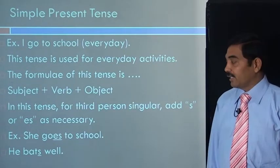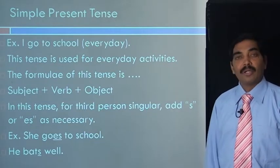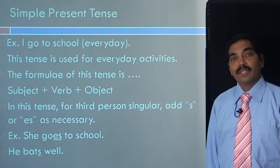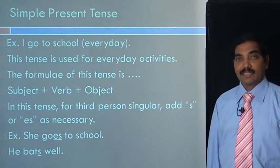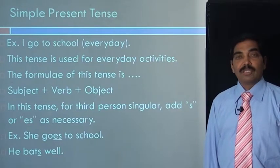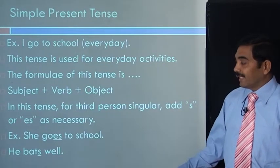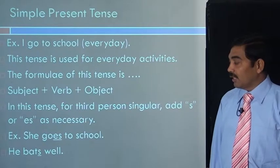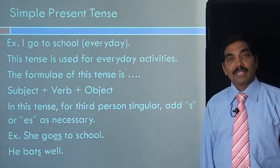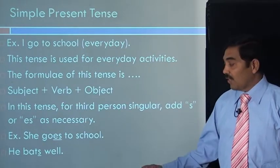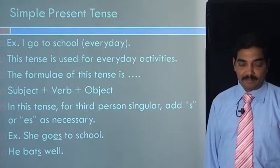For example, she goes to school, wherein we have added es with verb go. The second example: he bats well, herein we have added es with the verb bat.